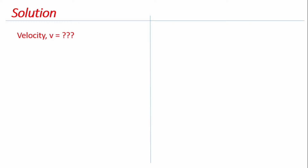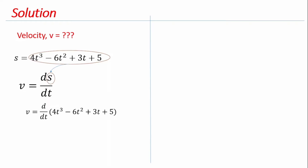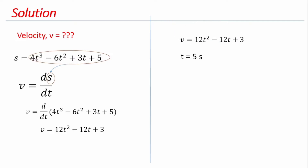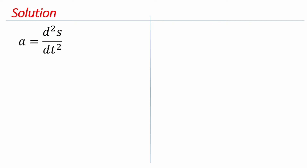To find velocity, we use v = ds/dt. Since we have the position equation, we differentiate it with respect to t. Differentiating x = 4t³ − 6t² + 3t + 5 gives v = 12t² − 12t + 3. Substituting t = 5 into the velocity equation, we get v = 243 meters per second.